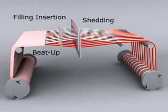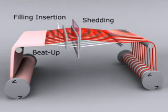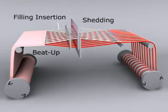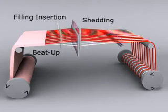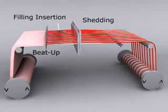Beat-up is the third motion that the weaving machine performs. It is done with the aid of a reed as it moves forward, beating the filling yarn into the fabric.